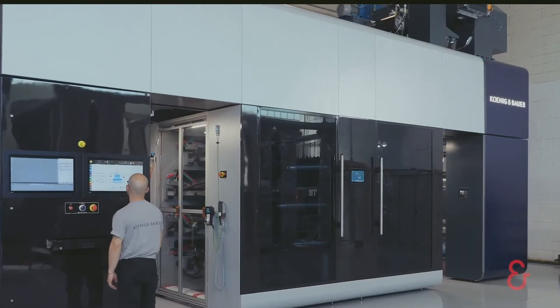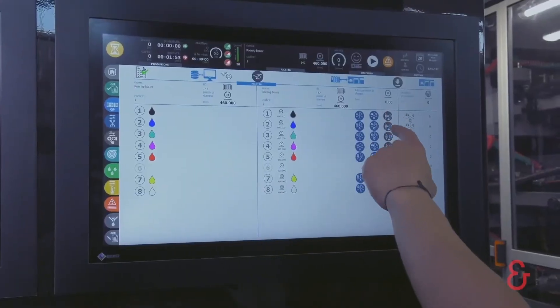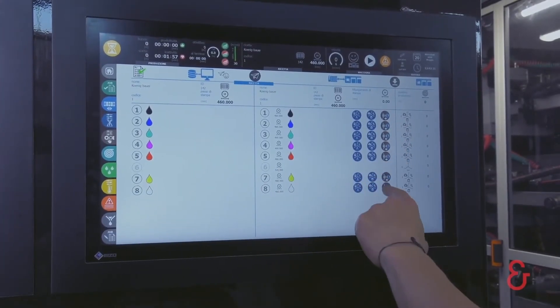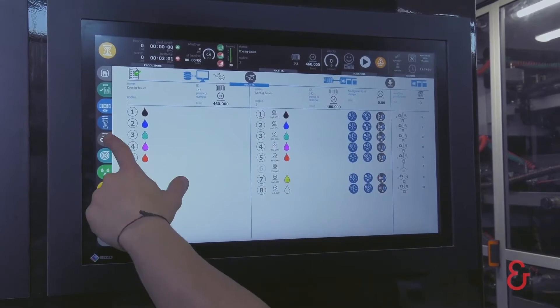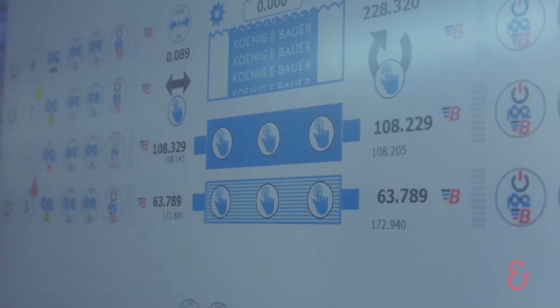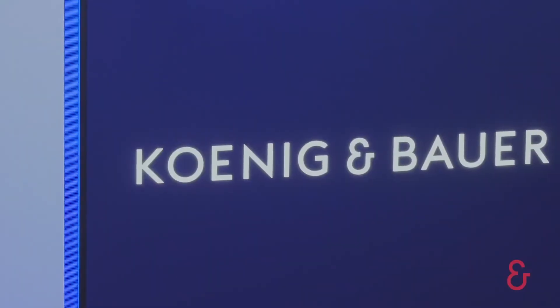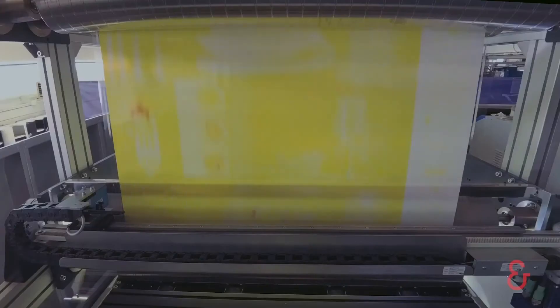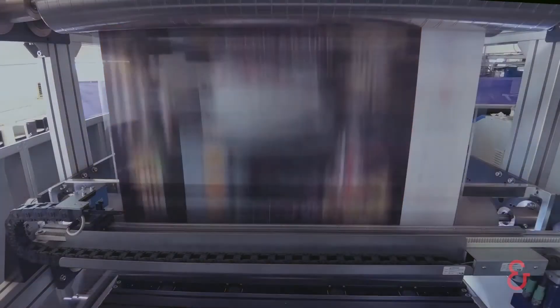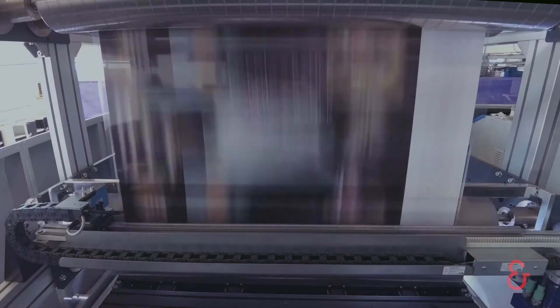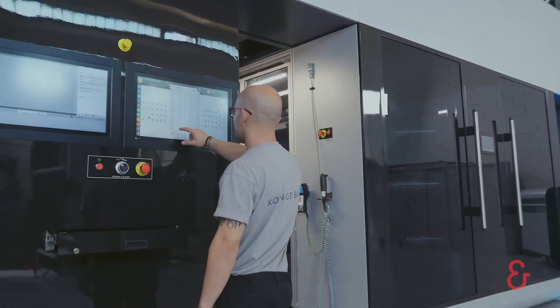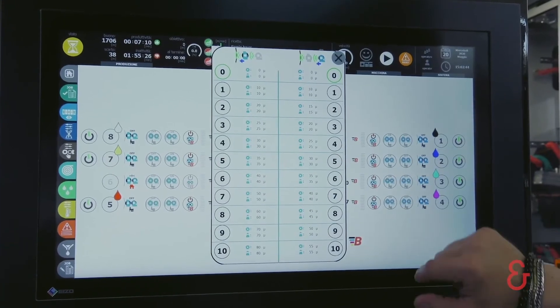Instead of step motors, Evo XC is equipped with highly dynamic and highly precise servo drives controlled by the new Printronic system, which allows the operator very quick and simultaneous setup of the printing pressure, as well as accurate positioning of all units. Thanks to its modular design, it is possible to retrofit this new technology onto all gearless CI flexo presses supplied by König & Bauer.